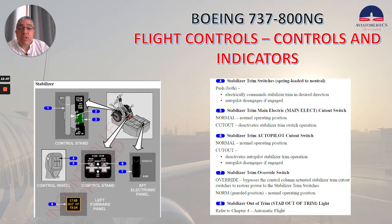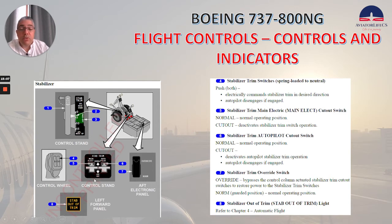We have the stabilizer trim switches — spring-loaded to neutral — located in the control wheel. Push both: electrically commands the stabilizer trim in the desired direction, and autopilot disengages if engaged. Number 5, we have the stabilizer trim main electric cutout switch. In the normal position — the normal operating position — cutout deactivates stabilizer trim switch operation. The stabilizer trim autopilot cutout switch: in the normal position, that's normal operating position; cutout deactivates autopilot stabilizer trim operation, and autopilot disengages if engaged.